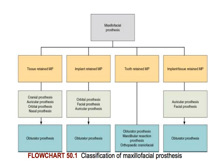In tissue retained prostheses, cranial, ocular, orbital, and nasal prostheses are included. In implant retained, orbital and auricular prostheses are included. In tooth retained, obturator prostheses, mandibular resection prostheses, orthopedic and craniofacial prostheses can be included. In implant or tissue retained, auricular prostheses and facial prostheses can be included.